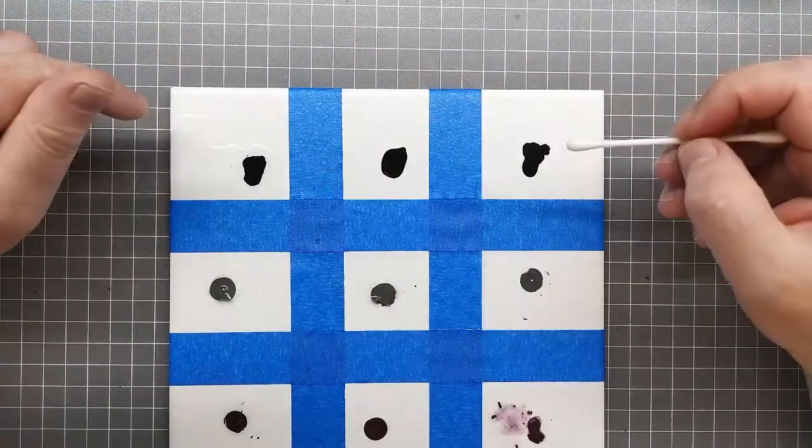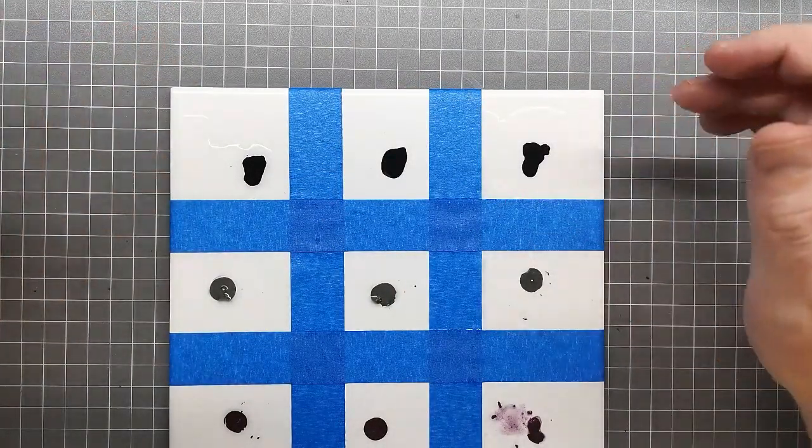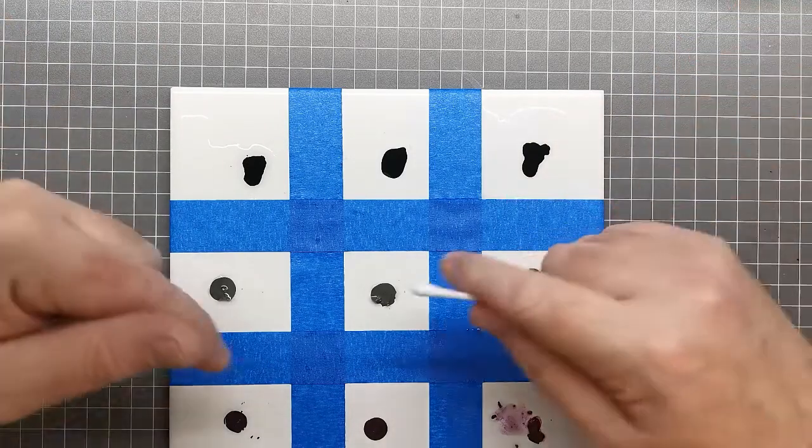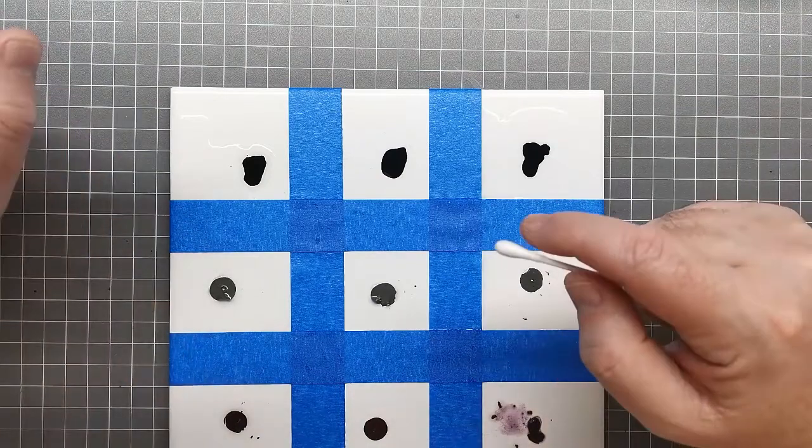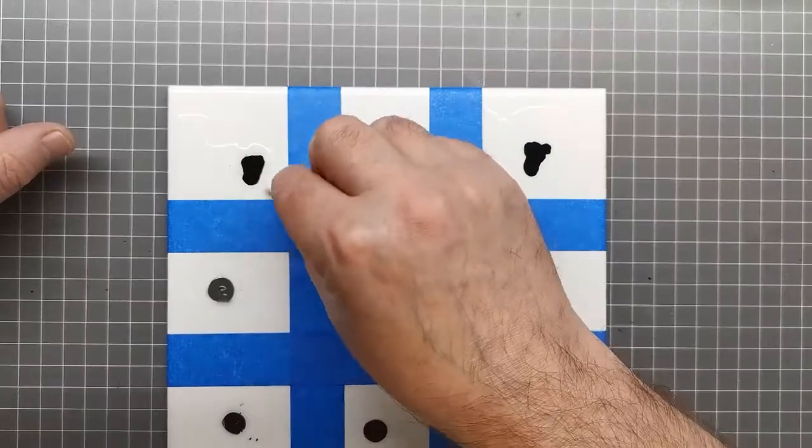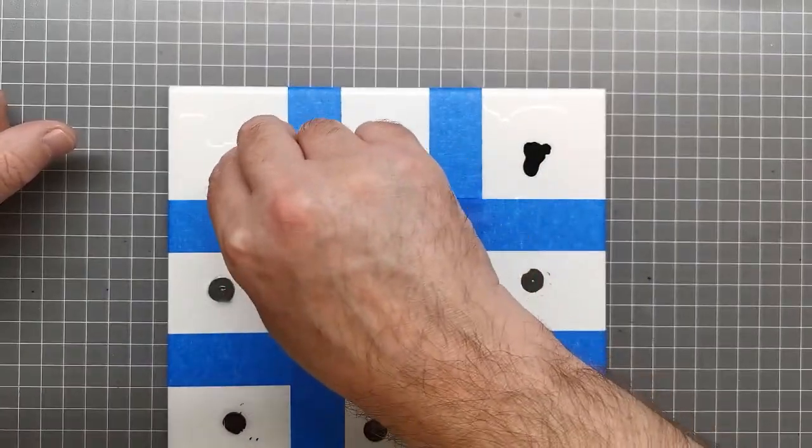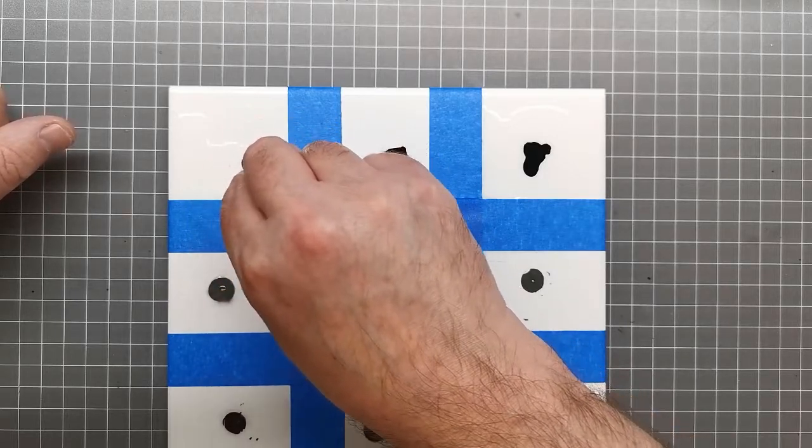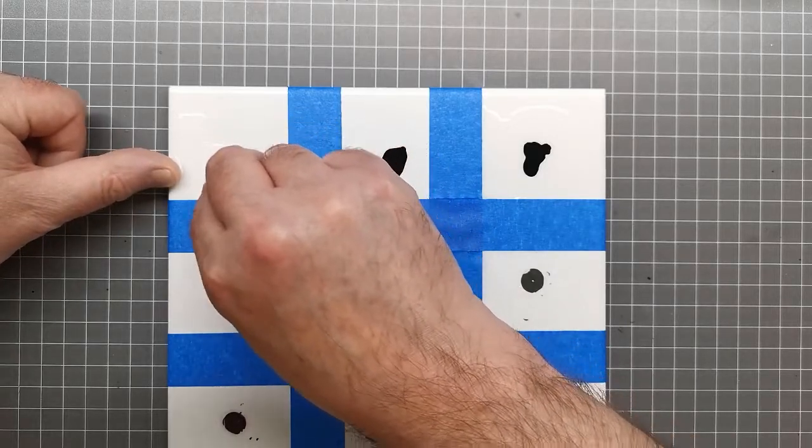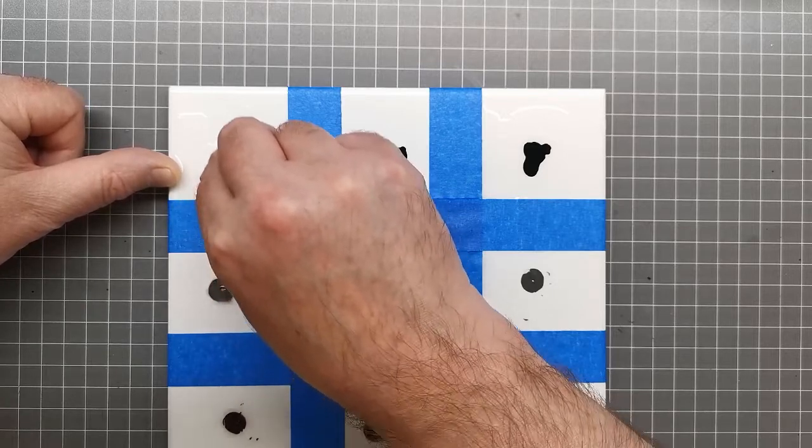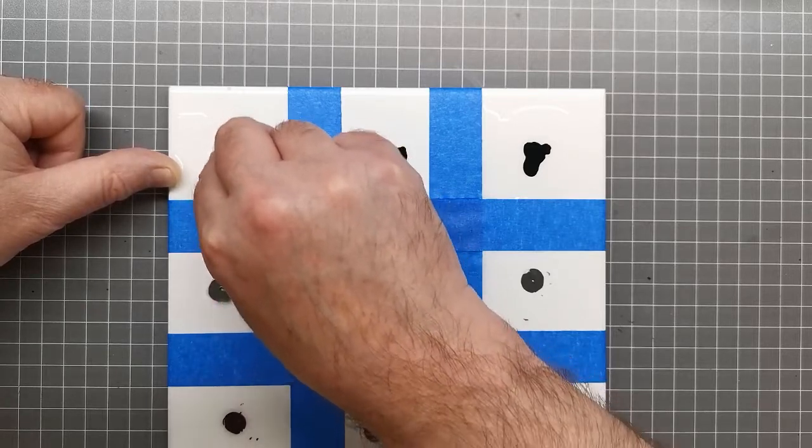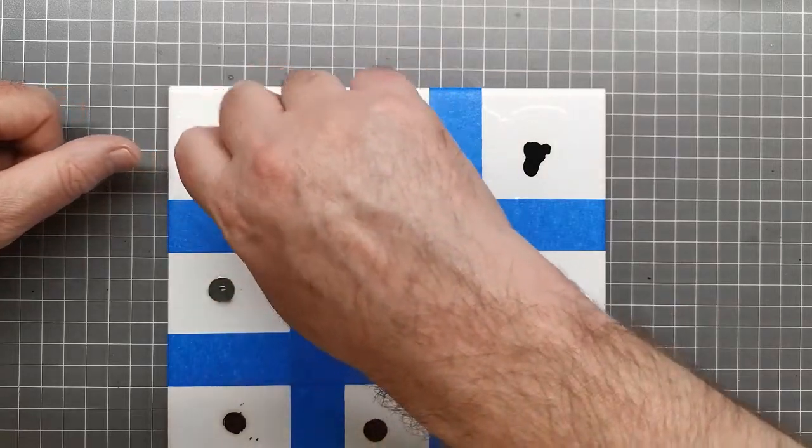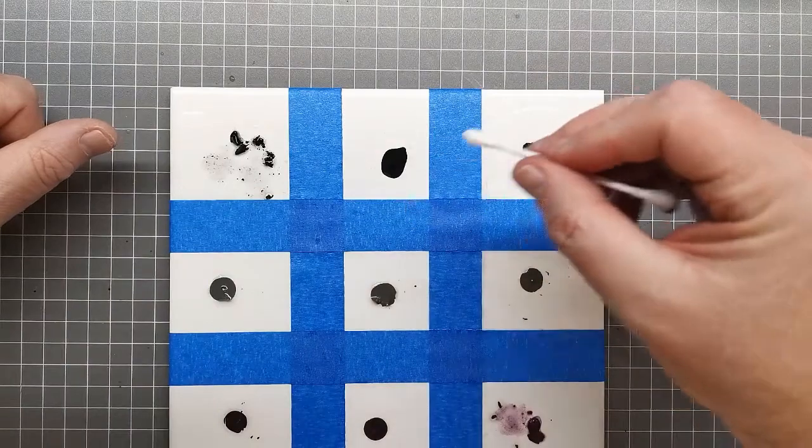Finally, we've got the Stynylrez. These paints work a little bit differently because they're polyurethane based. Distilled water took quite a bit of force to get that to come off. It is coming off, but it took a bit of force.